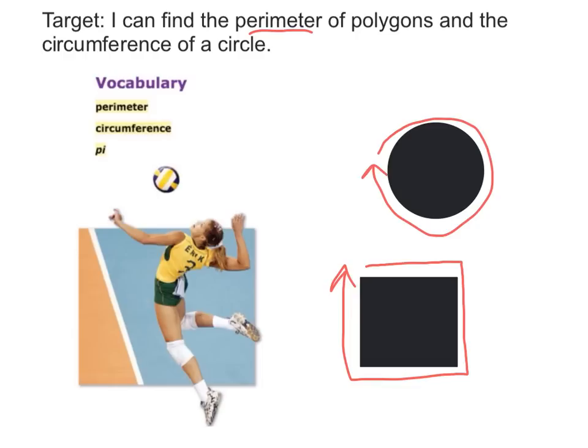And the distance around a circle would be called the circumference. Since we have circles, squares, and rectangles around us all the time, it's a pretty useful thing to know. This picture is trying to demonstrate how a volleyball is a circle and a volleyball court is a rectangle, so we're surrounded by circles and rectangles all the time.